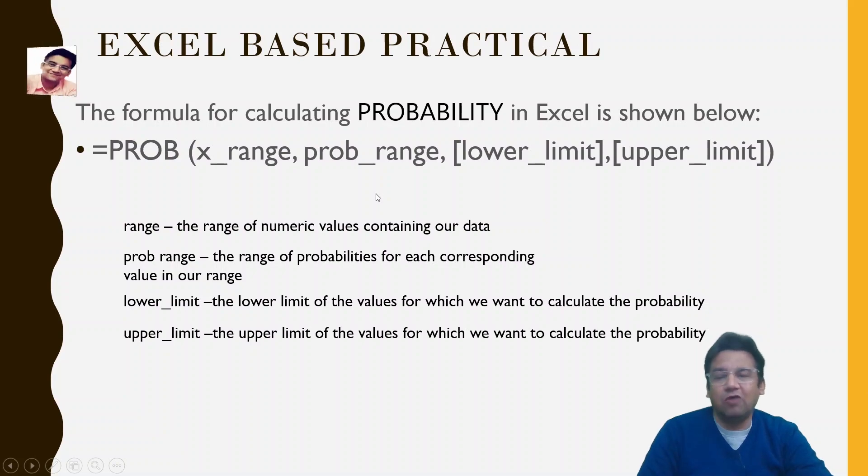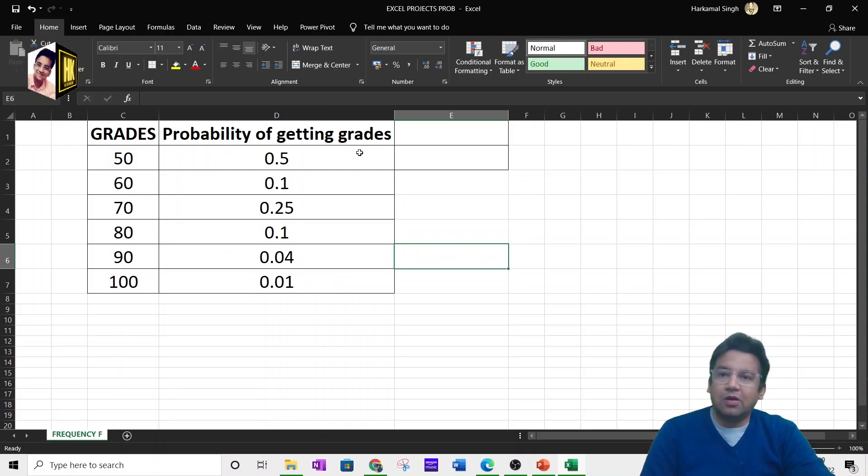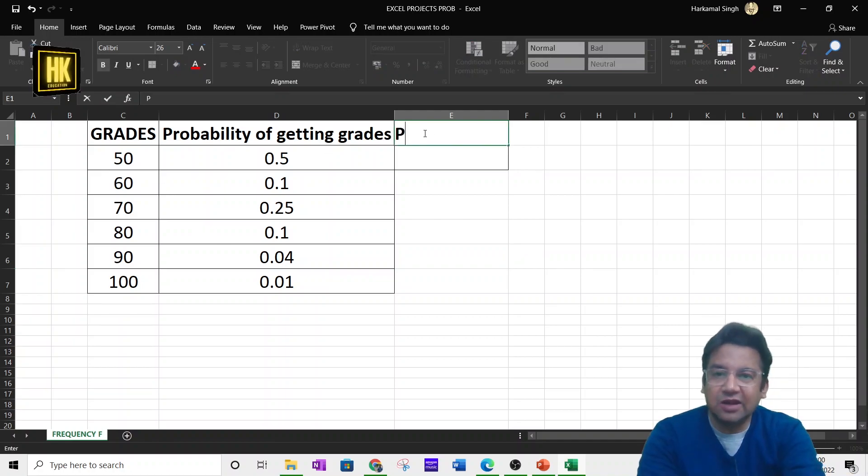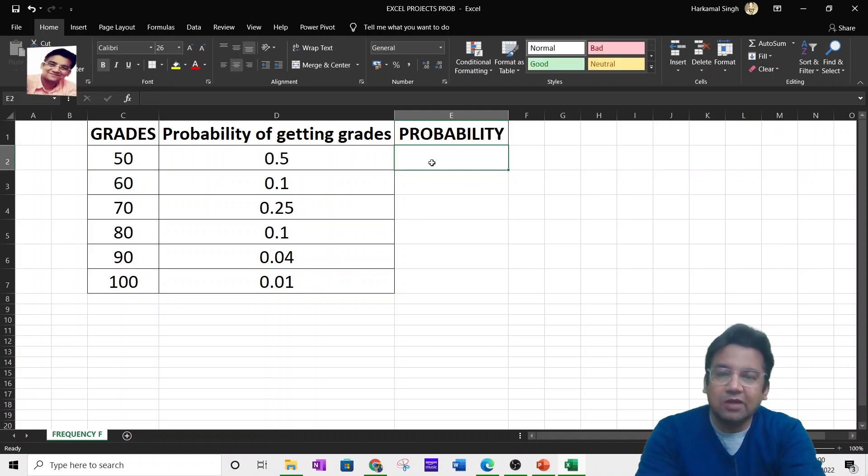Now let us see how we will calculate the formula of probability in Excel. Let us take an example. These are the grades and these are the respective probabilities. So in order to calculate the formula for probability, let us write here as probability.